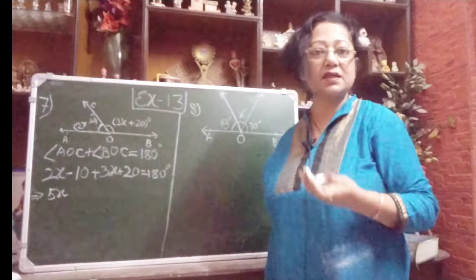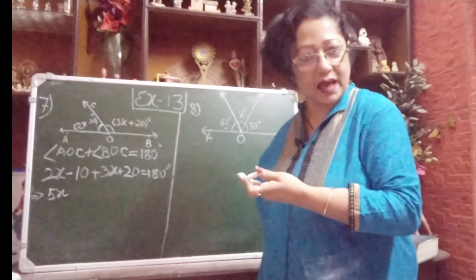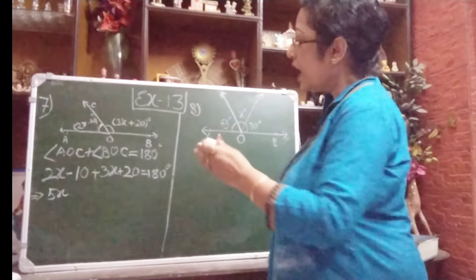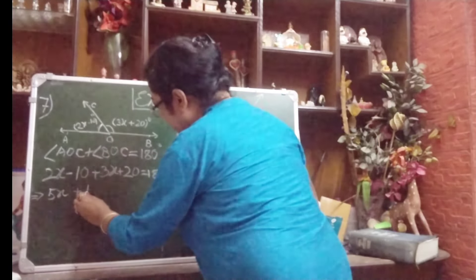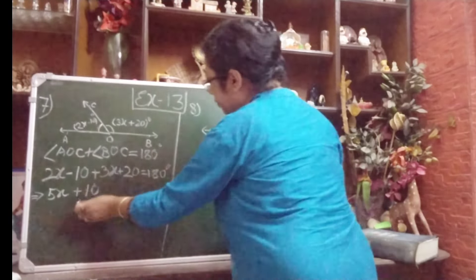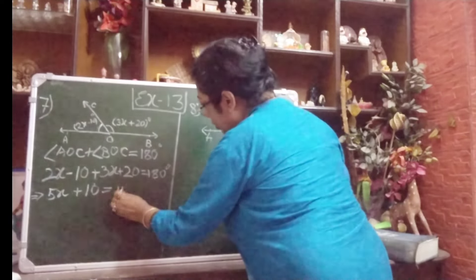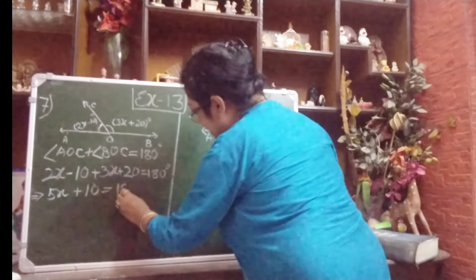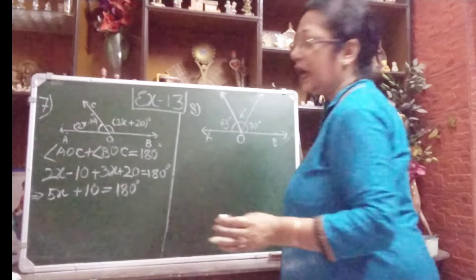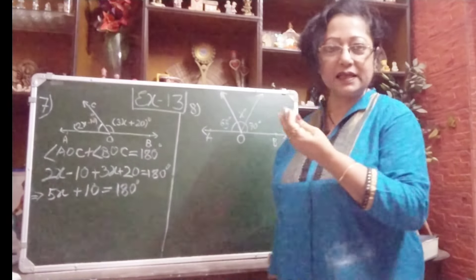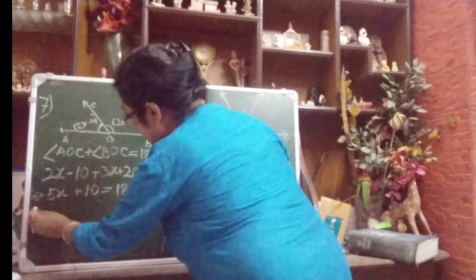Now we can solve easily. 2x plus 3x gives us 5x. Then minus 10 plus 20: since the bigger number is 20 and its sign is plus, we get plus 10. So we have 5x plus 10 equals 180. Now we will do side change — which means sign change.